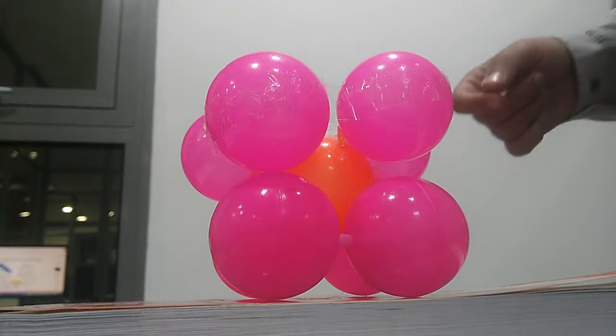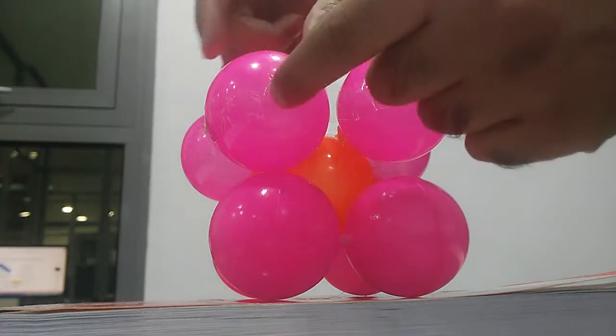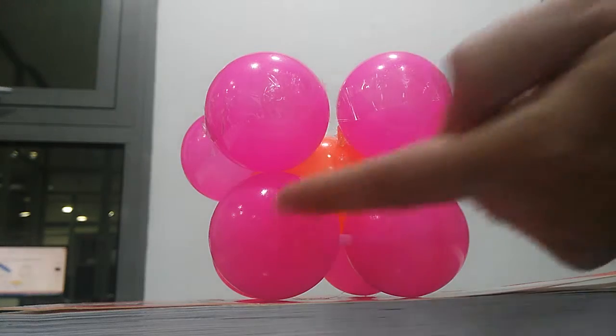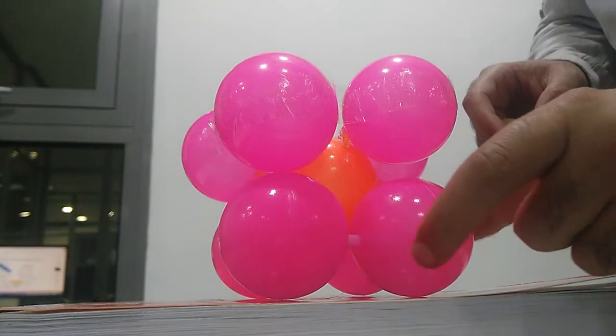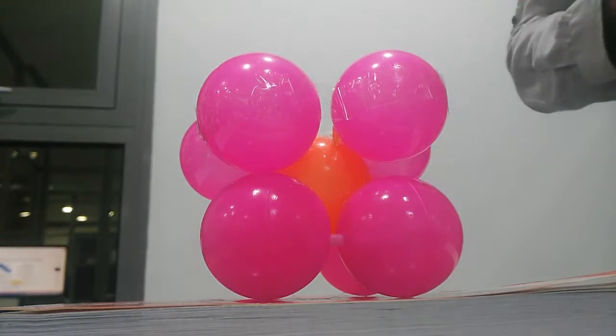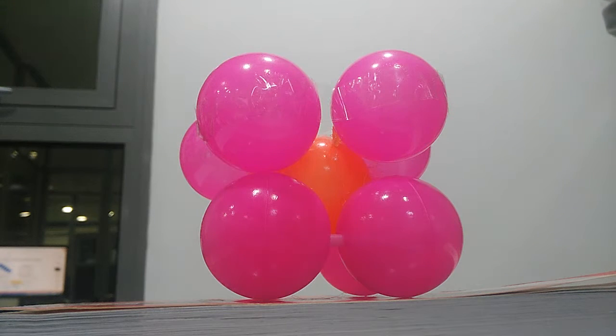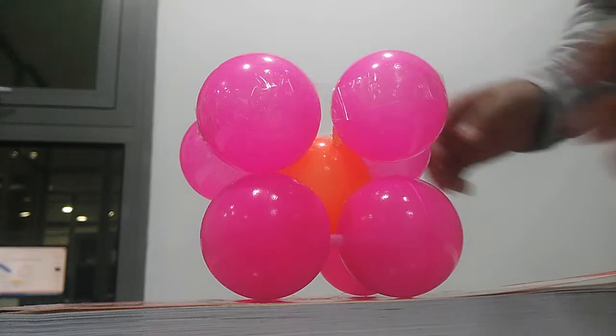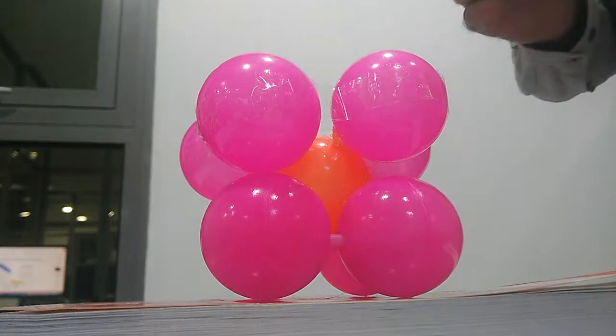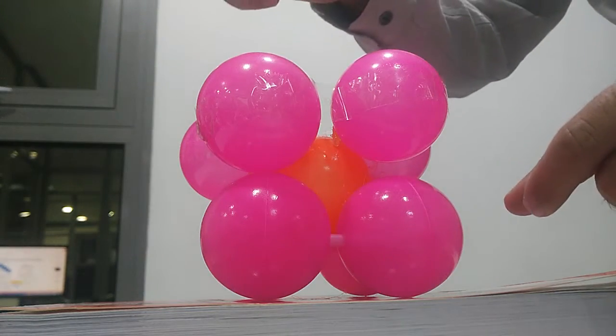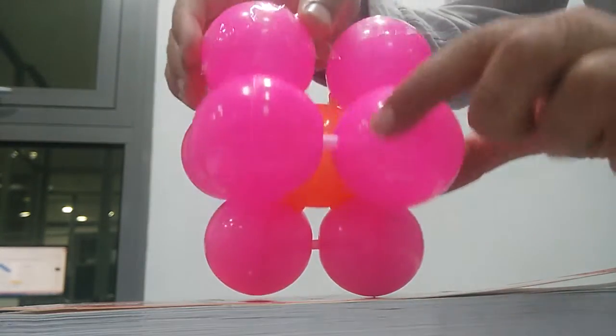To find the relation between the radius of each atom and the side of this BCC model—the model that they made with these colored balls—first of all, we use Pythagoras theorem. Look at the base.